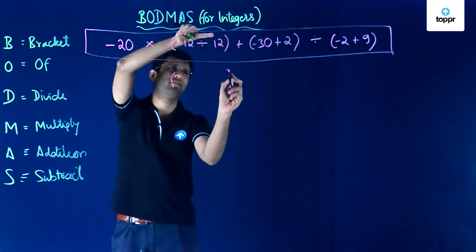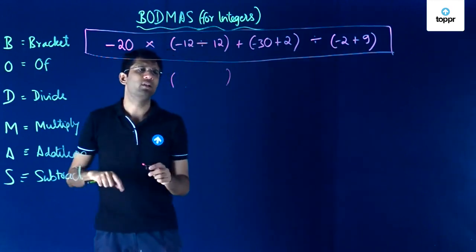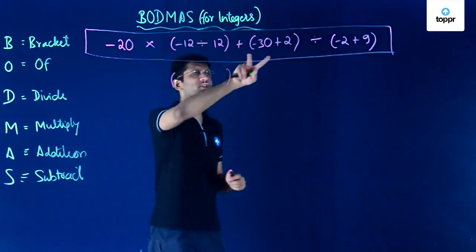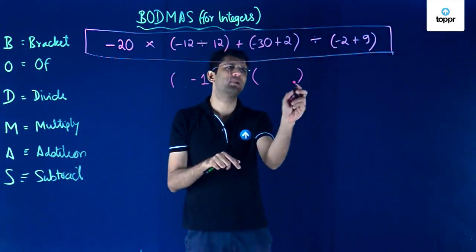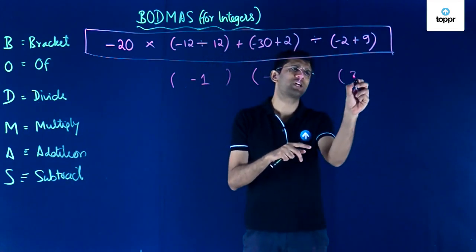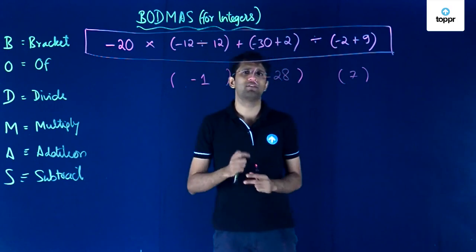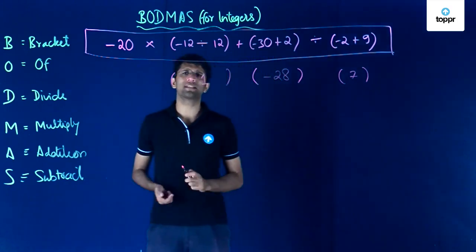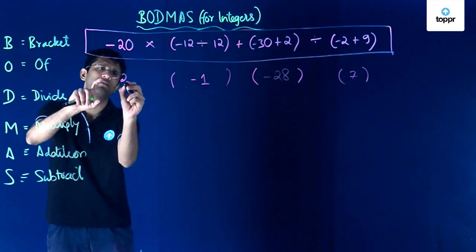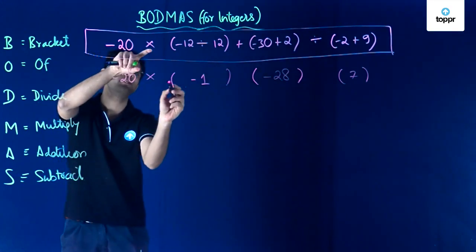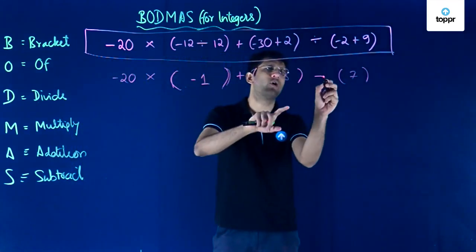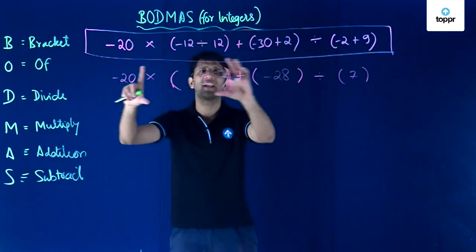Whenever we resolve the first bracket, we get minus 12 divided by 12, which equals minus 1. The second bracket is minus 30 plus 2, which gives minus 28. The third bracket is minus 2 plus 9, which gives 7. Now we have resolved the brackets and we write down the rest of the numbers as they are: minus 20 is preserved, the multiplication sign is preserved, the addition sign is preserved, and the division sign is preserved, giving a simplified expression.